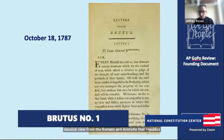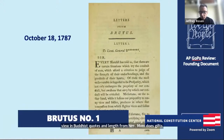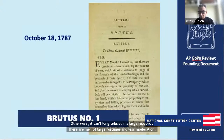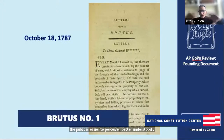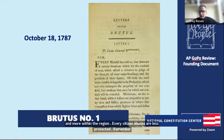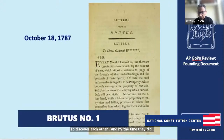'In a large republic, there are men of large fortunes and less moderation who have their own interests and would oppress their fellow citizens, sacrifice the public good to a thousand small views. In a small one, the interest of the public is easier perceived, better understood, and more within the reach of every citizen. Abuses are less protected.' This is the big difference between federalists and anti-federalists: Madison rejected that classical view. He said in America the large size of the republic would be an advantage, because it would be hard for mobs or factions to discover each other, and by the time they did, they'd be tired and go home. Representation would ensure that representatives could reflect their constituents' interests across a large territory.